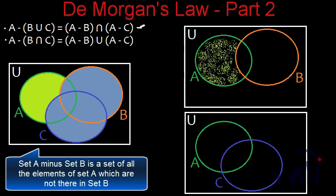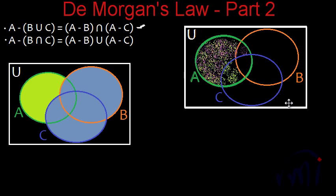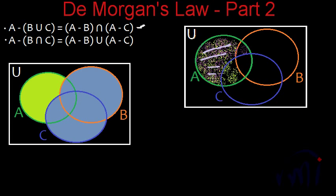Similarly, A minus C is the elements of set A which are not in set C, represented in the second diagram. To find the intersection of A minus B and A minus C, I am overlapping these two figures. The area where we find both green and purple dots represents the intersection of A minus B and A minus C — and this is the same area shaded in light green in the left diagram. So this is the proof of the third law.